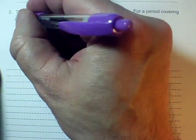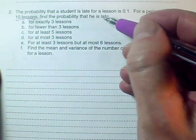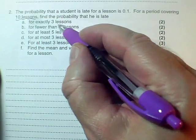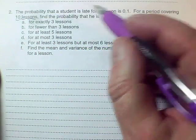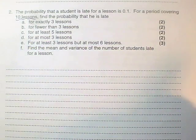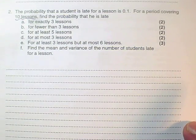We've got a period containing ten lessons, and he might be late or not. We're looking at how many times he is late in a total of ten lessons. So we're counting successes in independent trials.